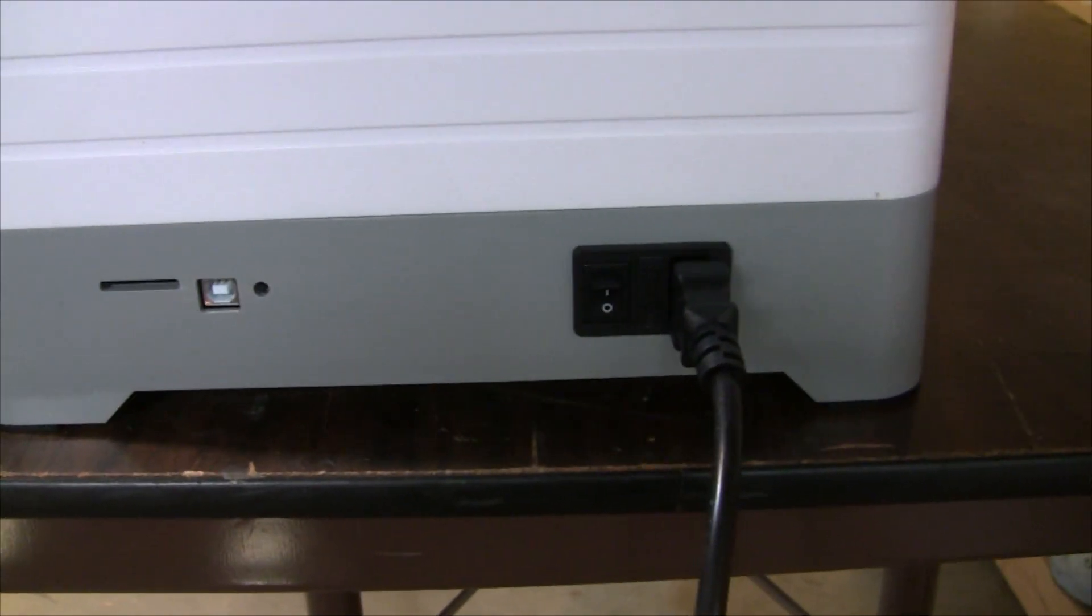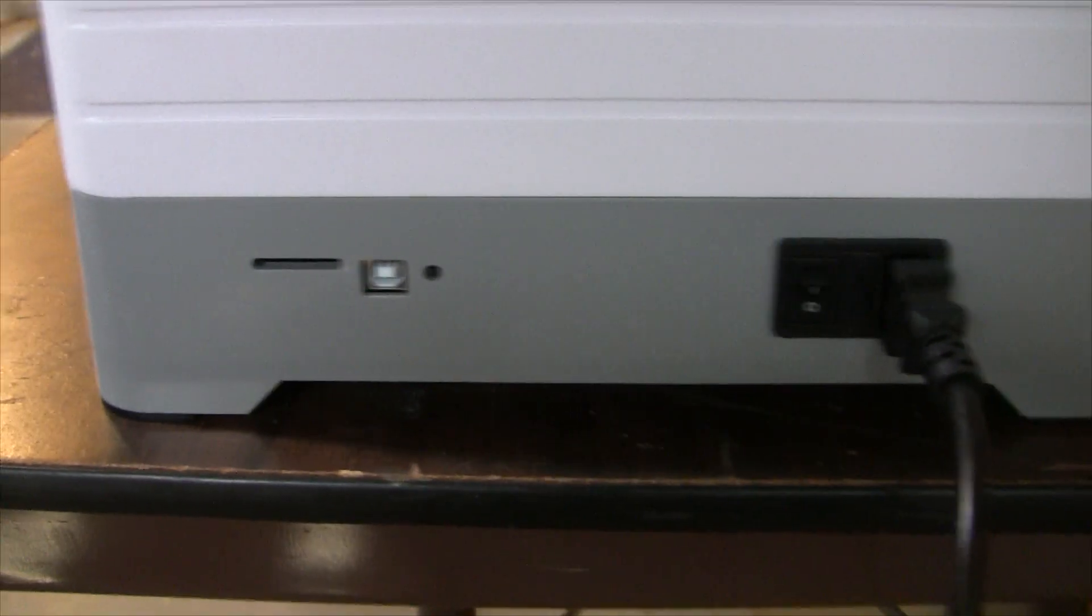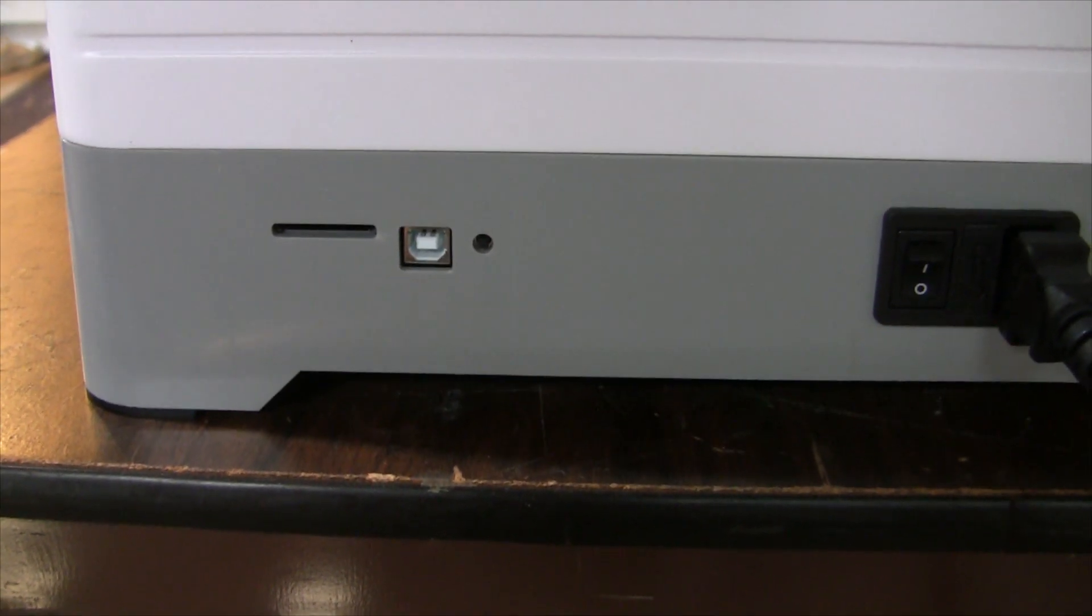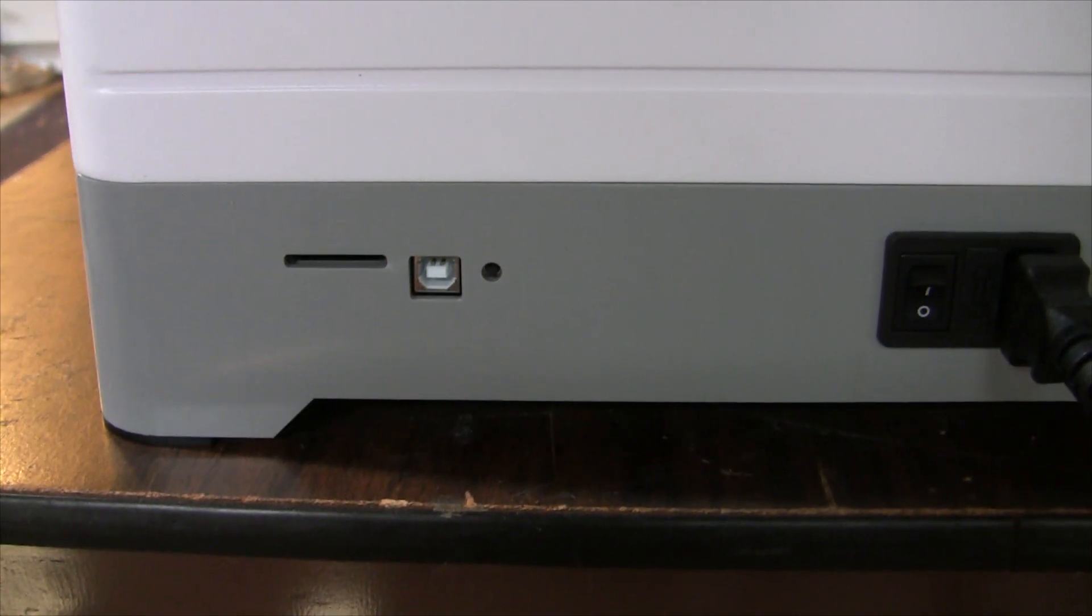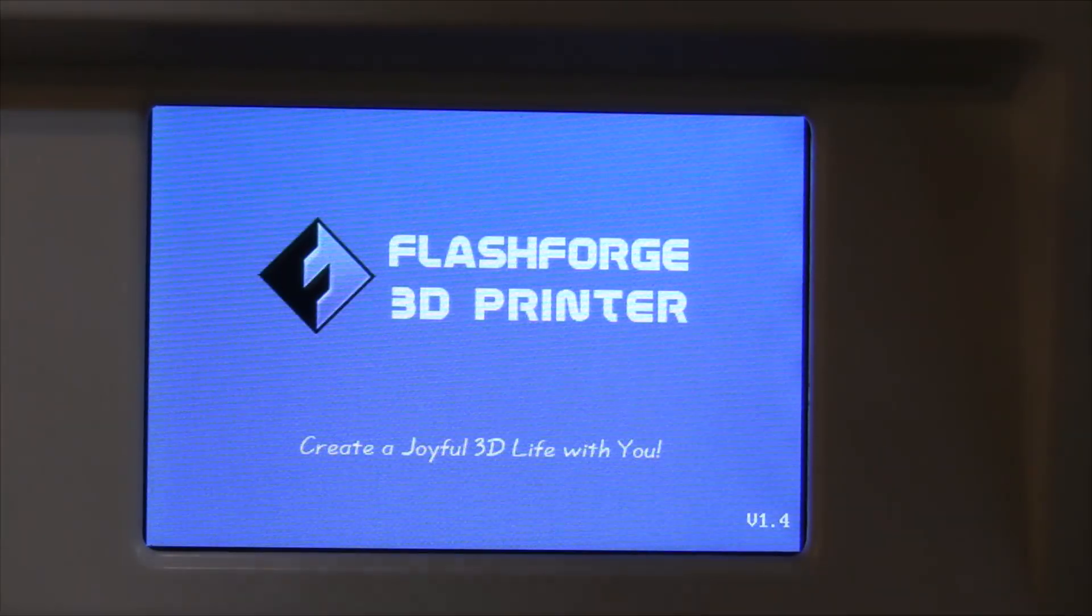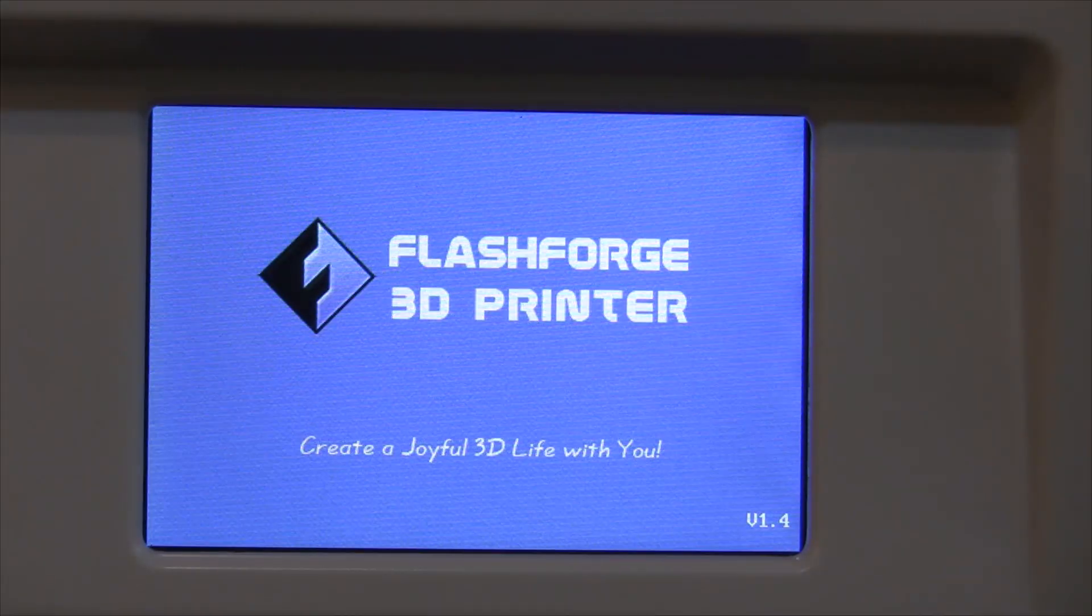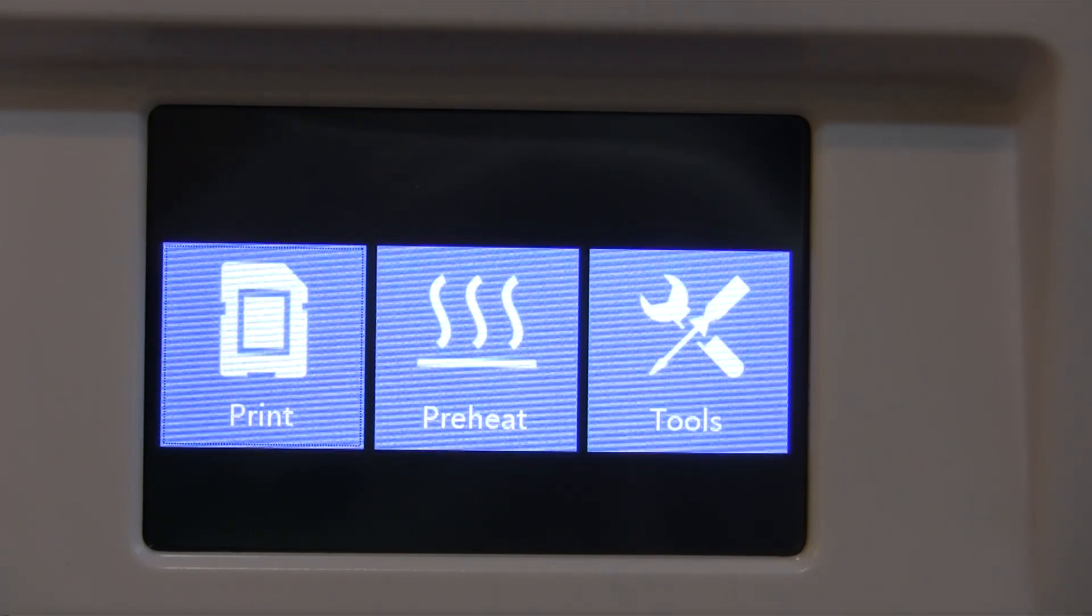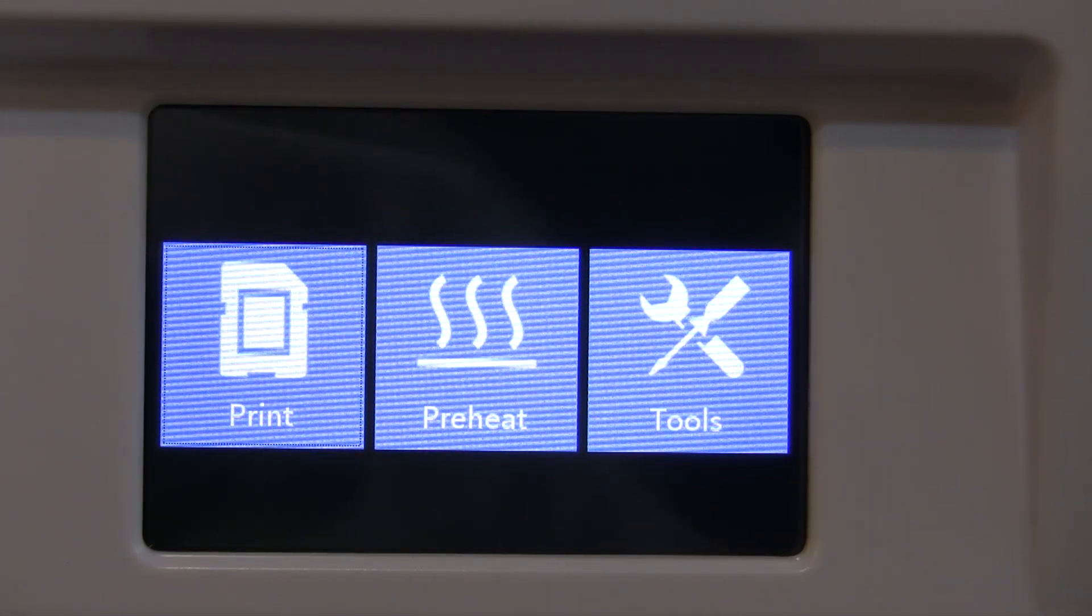Alright, time to power it up. Plug is on the right side with the on-off switch. Here's where the USB port and the SD card goes in. Alright, let's power it up. There we go. Flash Force 3D printer. Nice cool light comes on inside.